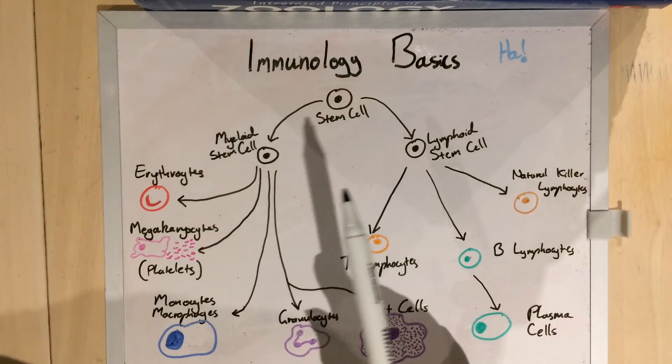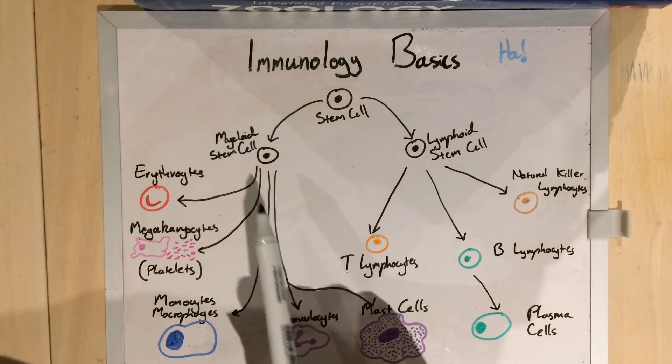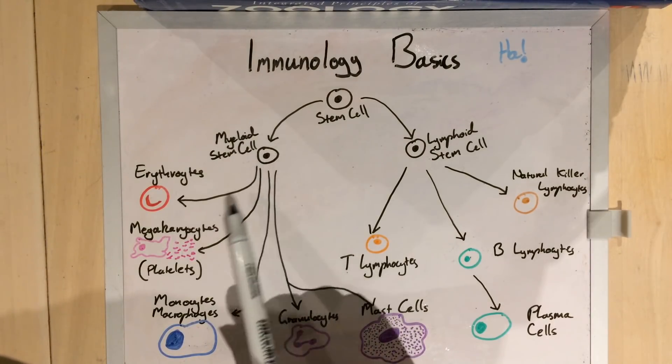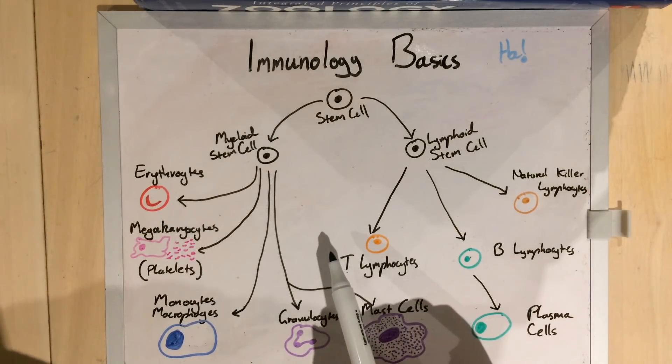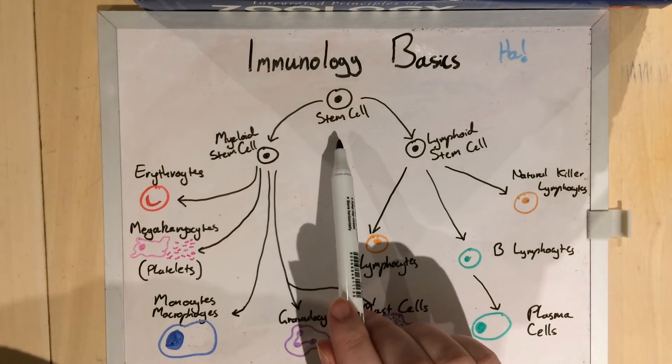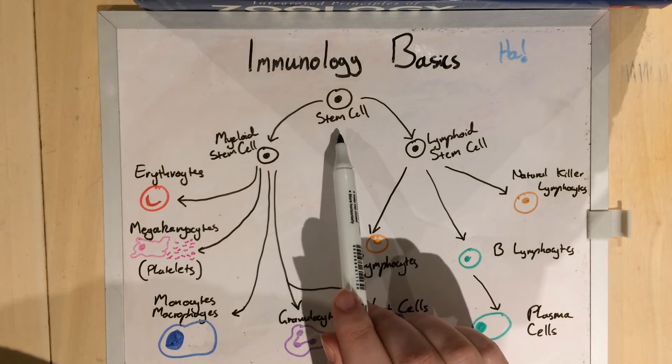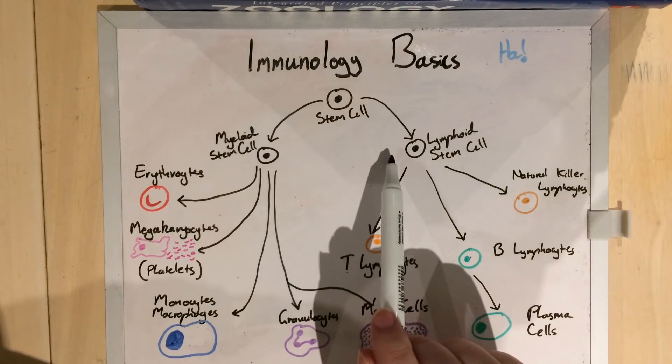Now, there are lots, lots more cells than I've drawn here, including those that take you from a stem cell through to a mature cell, but they're not necessary for your understanding at this point. All of these cells come from the same sorts of stem cells, which are in the bone marrow, and they differentiate into two lines.